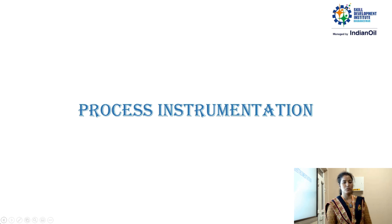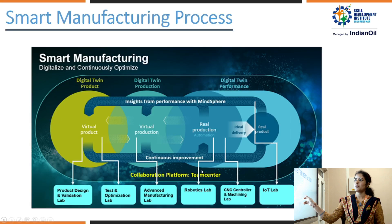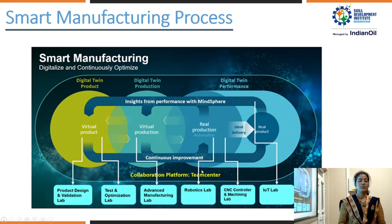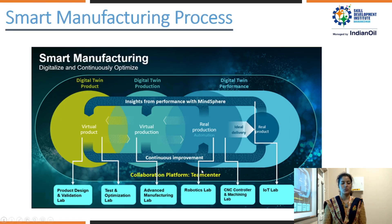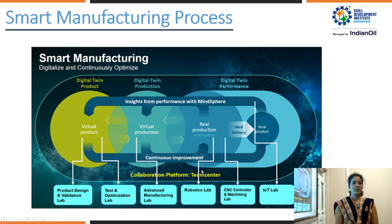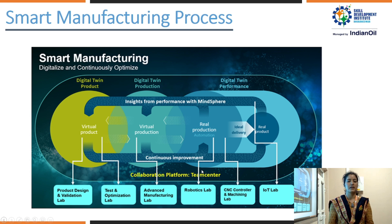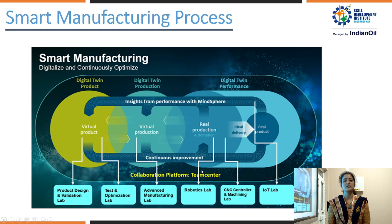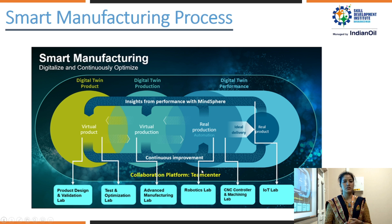Let's have an overview. Before going to the process instrumentation course, the Siemens COE is providing a smart manufacturing process. What is a smart manufacturing process? When a customer expects a product, that product is delivered to the market according to customer satisfaction and reliability.